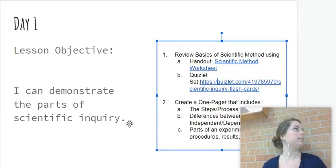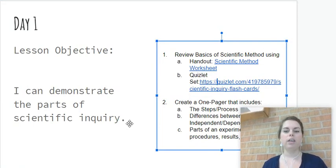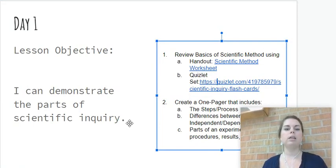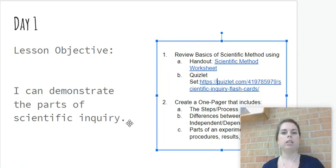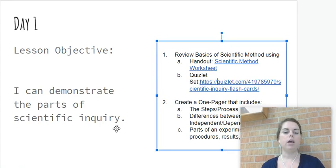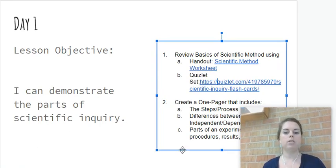Our last piece you could test your knowledge with is a one pager. You would list the steps and process of the scientific method, as well as differences between independent and dependent variables and parts of an experiment. So good luck, guys. We'll look forward to seeing you soon.